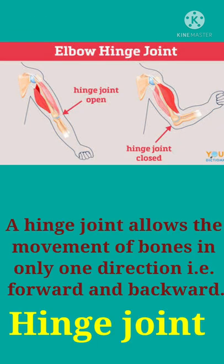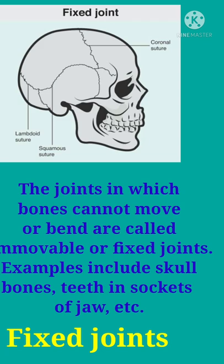The hinge joint allows the movement of bones in only one direction, i.e. forward and backward. Joints in which bones cannot move or bend are called immovable or fixed joints. Examples include skull bones and teeth in the socket of the jaws.